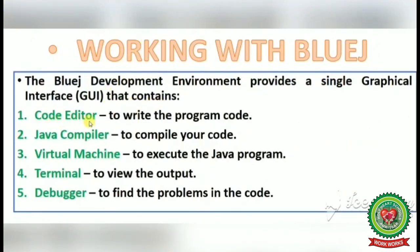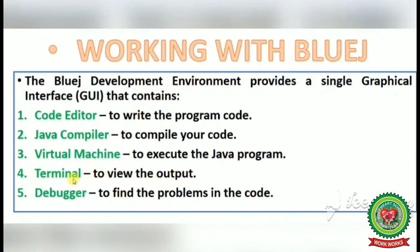The BlueJ environment includes: a code editor to write program code — the window where you write your programs; a Java compiler to compile your source code into intermediate code; a virtual machine to execute the Java program, translating intermediate code into object code; a terminal to view the output — the output window where we see our results; and a debugger to find problems in the code, helping identify any errors in our program.